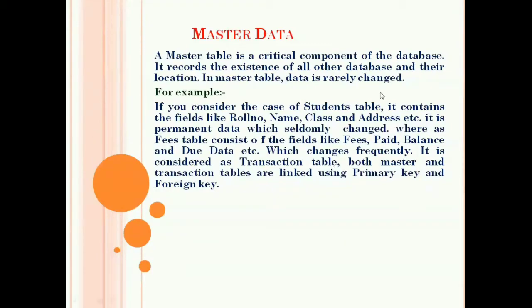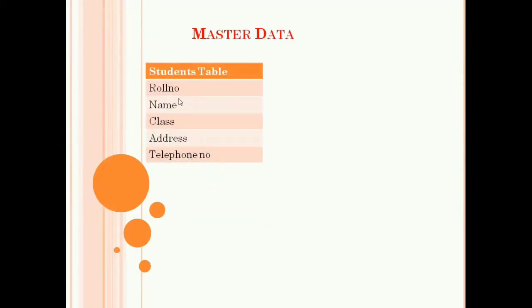So the student table is the master table, and the fees table is the transaction table. Both master and transaction tables are linked using a primary key and a foreign key. In the master table we need to create a primary key, and in the transaction table we also need to create a primary key so that both tables can be linked using the primary key and foreign key.